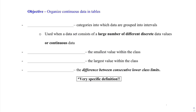Heading into our next objective, we need to know how to organize continuous data in tables. This introduces the idea of classes — categories into which data are grouped into intervals. We use these when a data set consists of either a large number of discrete data values or continuous data, so we don't want to handle many categories individually.